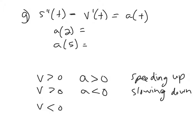If velocity is negative and acceleration is also negative, you're moving backward and accelerating in that direction. Returning to the ball example: on the way down, velocity is negative and gravity continues to pull the ball downward, accelerating it in that direction. That's why the ball moves faster the closer it gets to the ground — this is a case of speeding up.